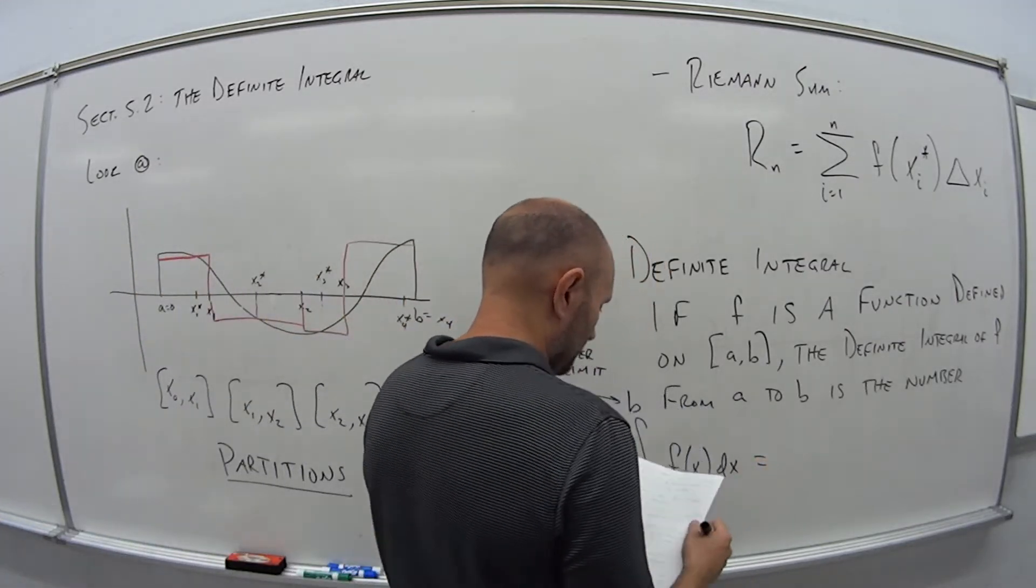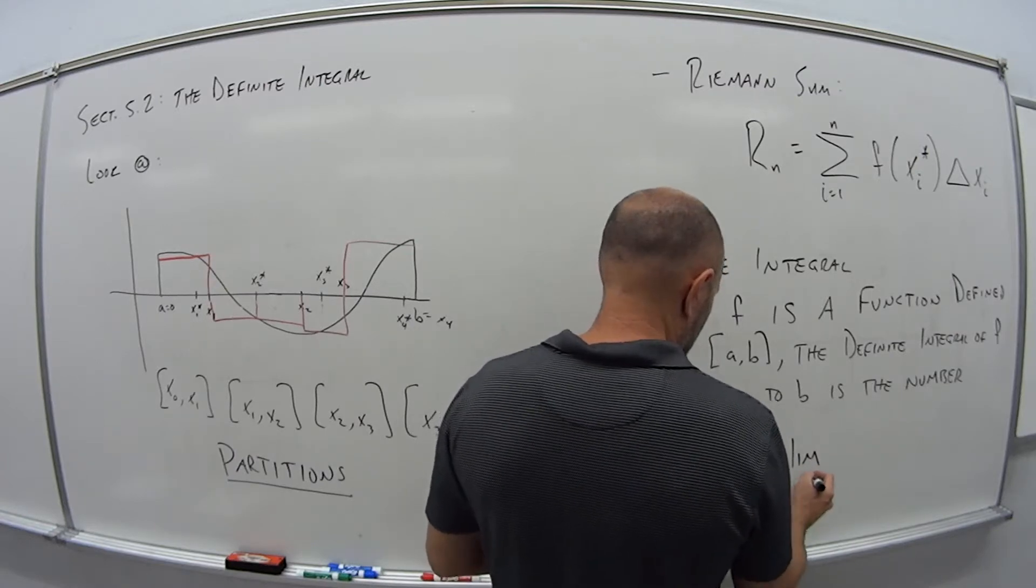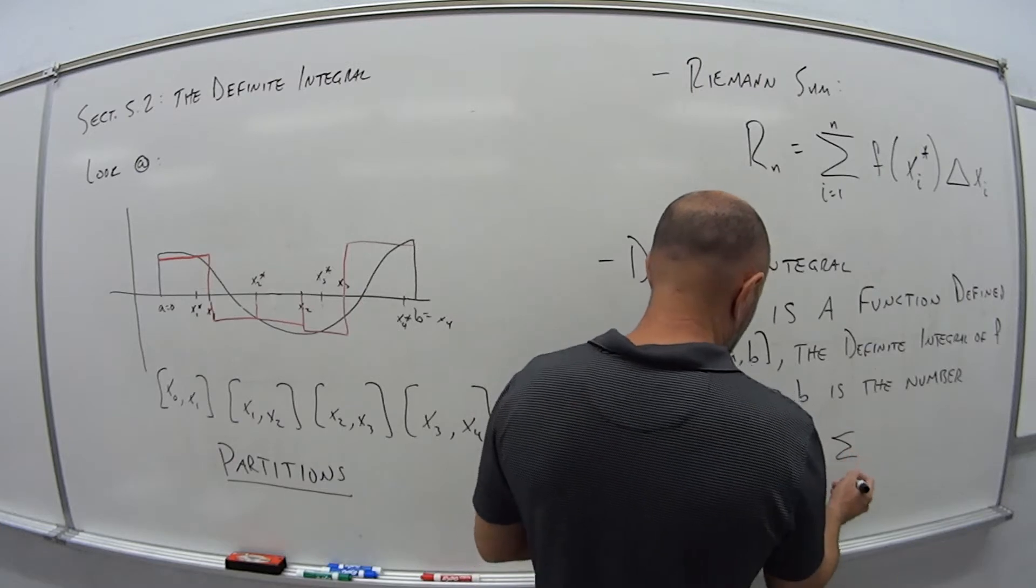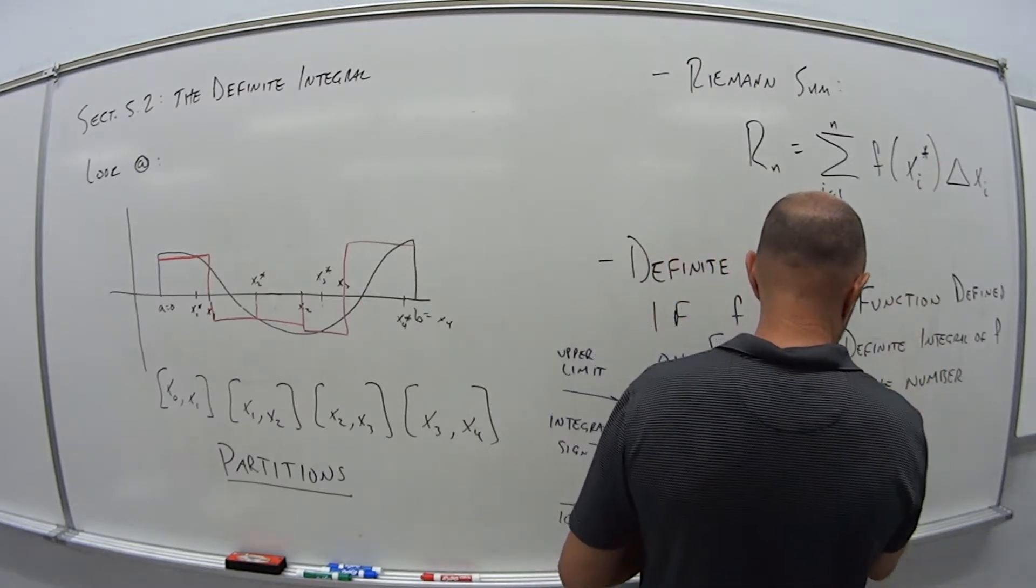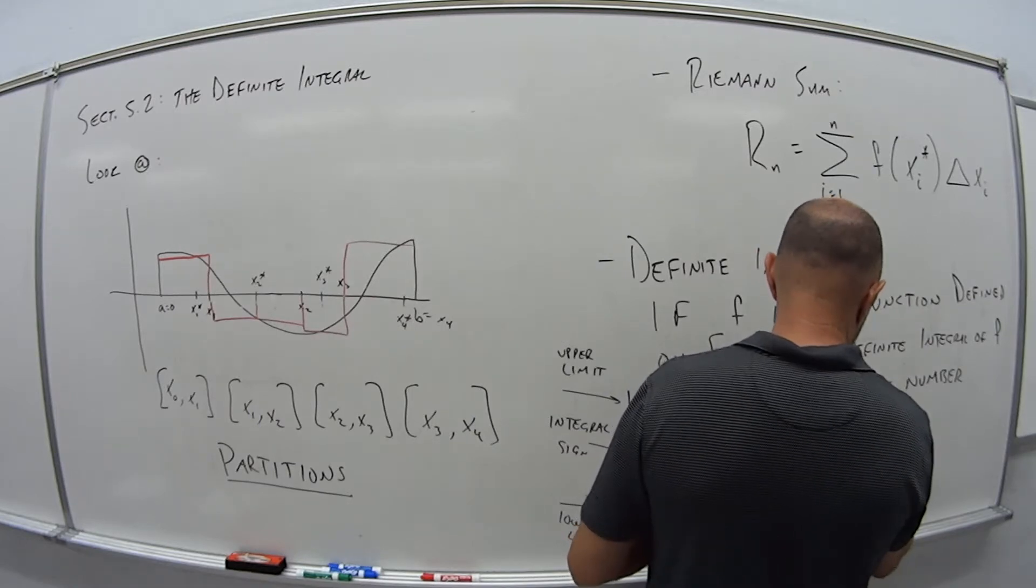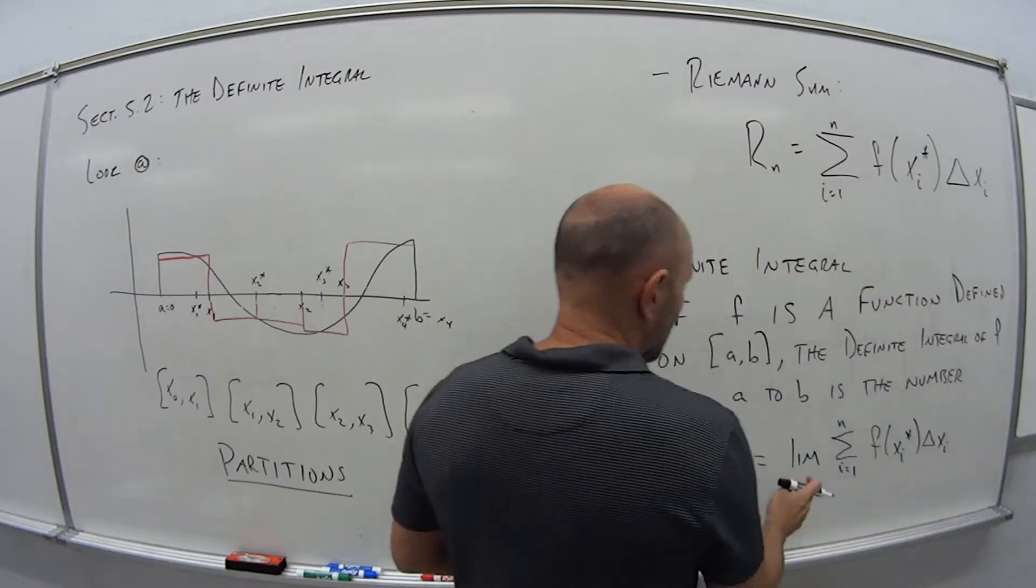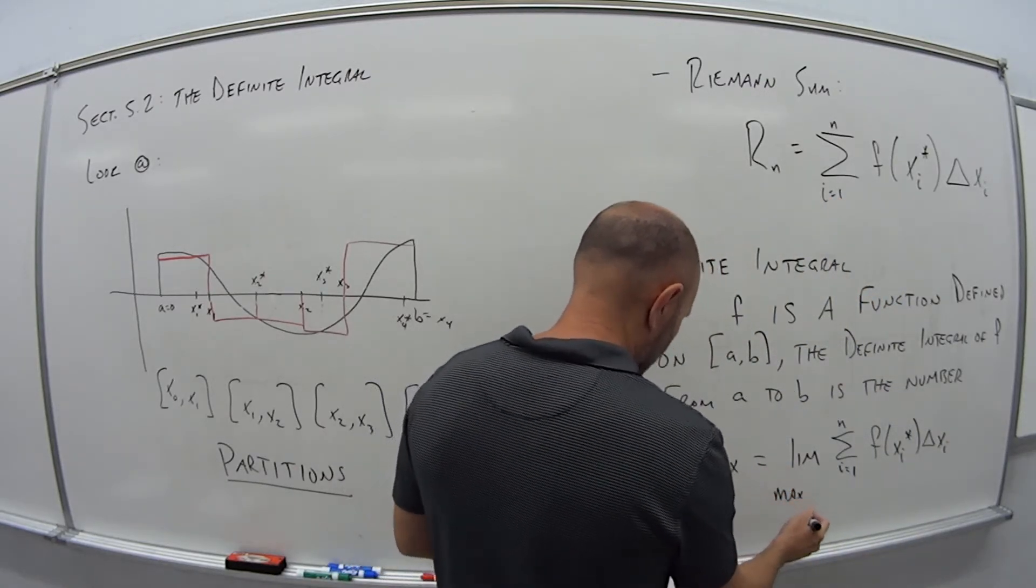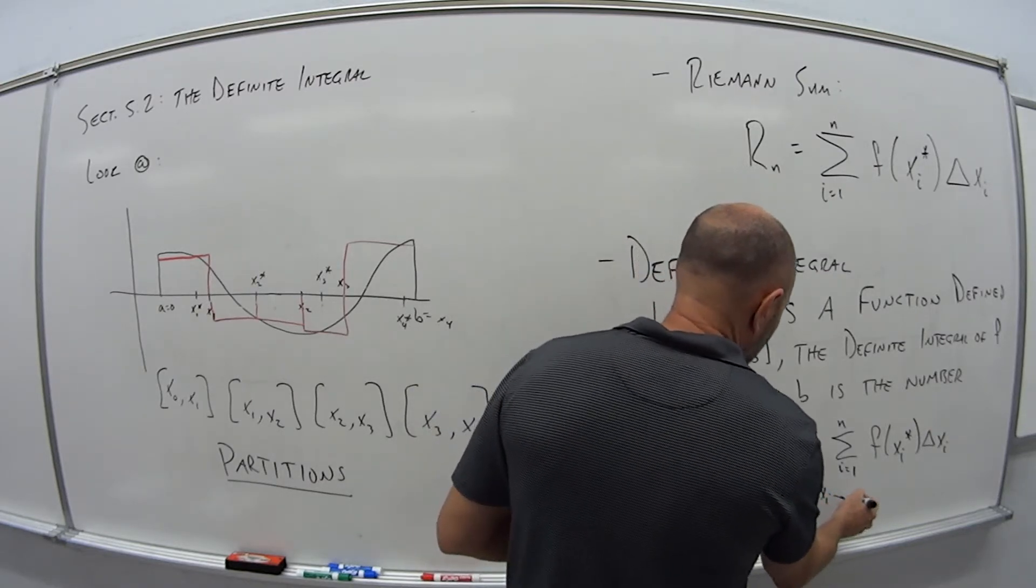So it's the integral from A to B of the function, F of X, DX. So the function with respect to the variable X. And this is just the limit. So the limit, it's the limit of the sum, i is 1 to n, of these Riemann values. F of Xi star, delta Xi, but it's the limit as the max of delta Xi goes to 0.